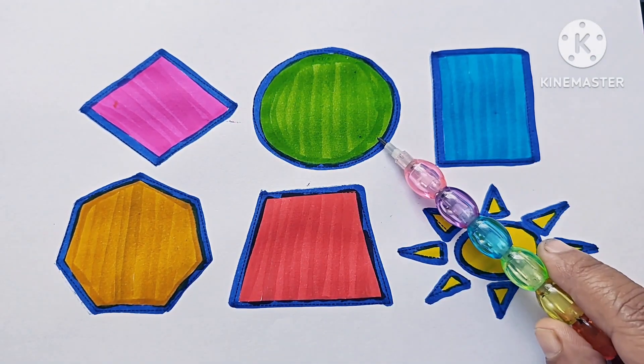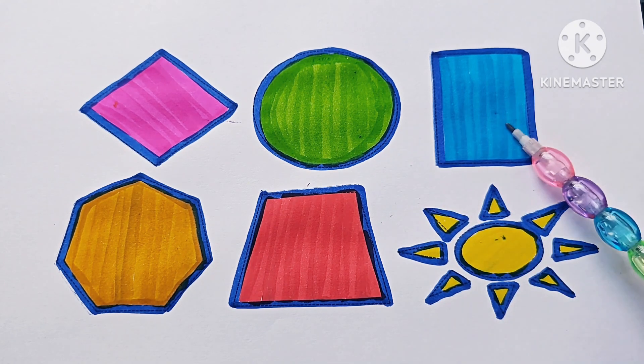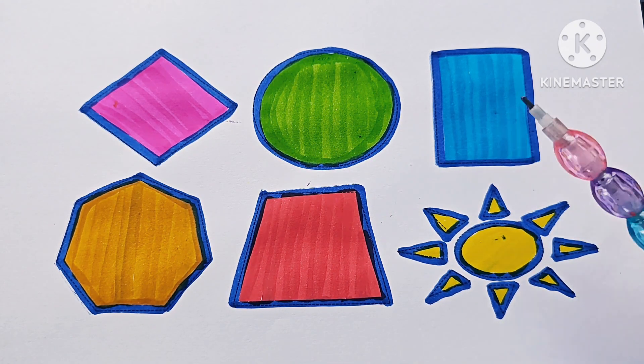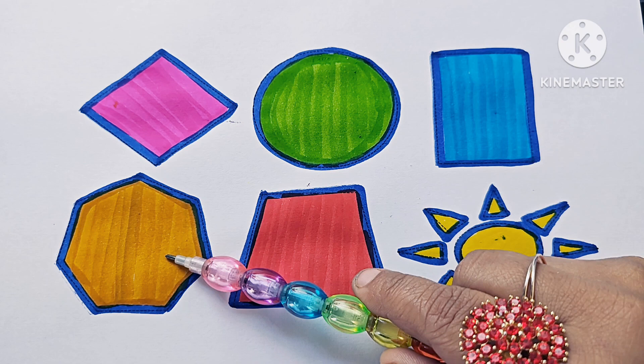It is called diamond. Circle, it has no sides. Rectangle, it has four sides. Heptagon, it has seven sides.